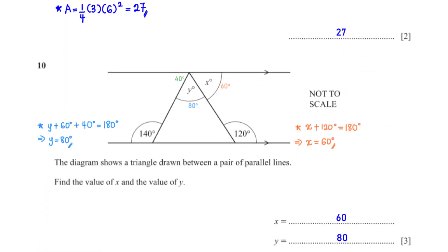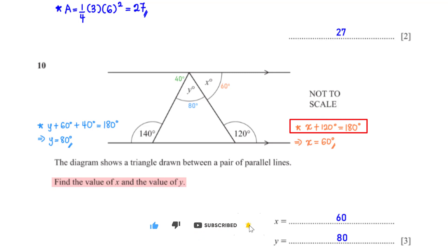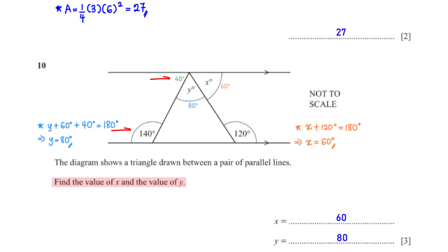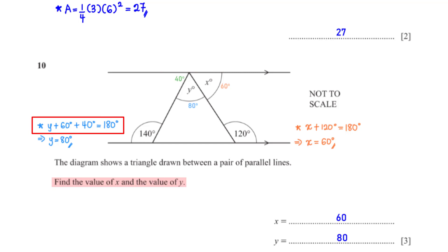The diagram shows a triangle drawn between a pair of parallel lines. Find the value of x and the value of y. x and 120 are interior angles; interior angles add up to 180 degrees, so x plus 120 equals 180, giving x equals 60. Similarly, subtracting 140 from 180 gives 40. Angles on a straight line add up to 180 degrees, so y plus 60 plus 40 equals 180, giving y equals 80.